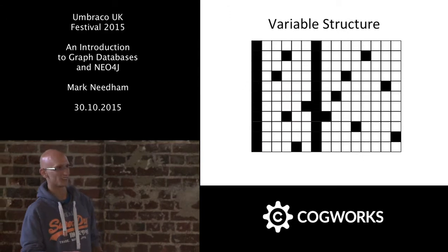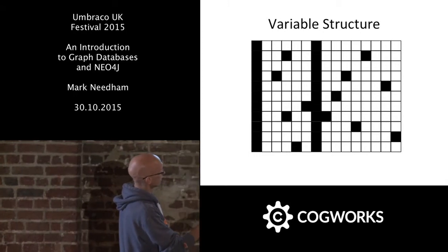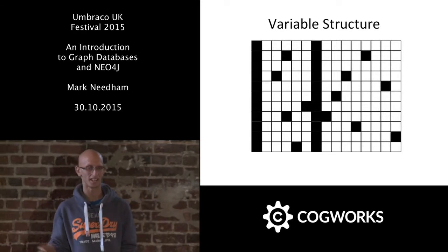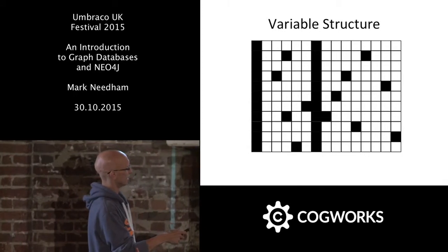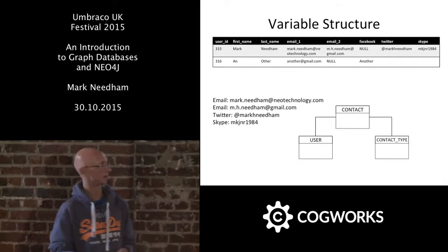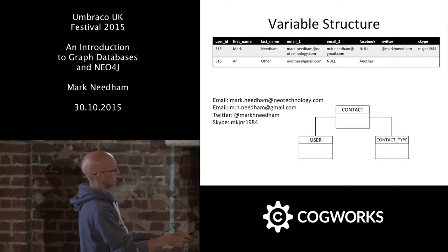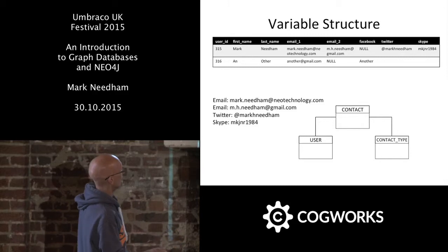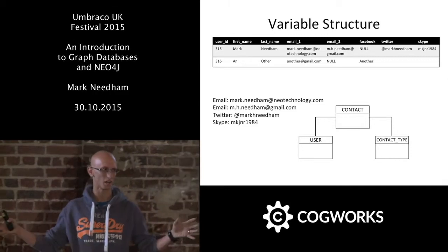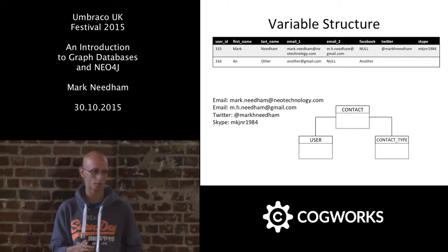Variable structure is one dimension. If you've worked with a relational database, you start with a beautiful schema — every field is defined — and then all the gaps start appearing: null, null, null for whole columns. For a persons table, you might have user ID, first name, email, social media fields, but then Mark has no Facebook account, someone else has no Twitter or Skype. A graph takes some of that problem away because nodes don't need to share the same fields.